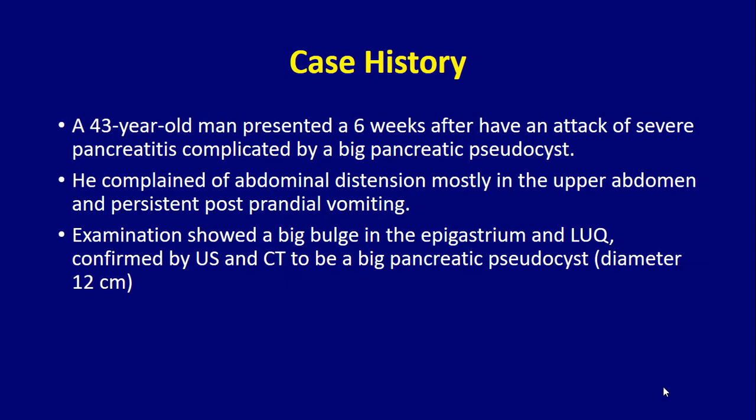I'm going to present a case in which we used EUS-guided endoscopic intervention to create a fistulous tract between the stomach and the cyst. The patient is a 43-year-old man who presented with a six-week history of pancreatitis complicated by a large pancreatic pseudocyst. He complained of abdominal distension, mostly in the upper abdomen, and persistent post-prandial vomiting suggestive of gastric outflow obstruction. Examination showed a large bulge in the epigastrium and left upper quadrant, confirmed by ultrasound and CT to be a 12 cm pancreatic pseudocyst.